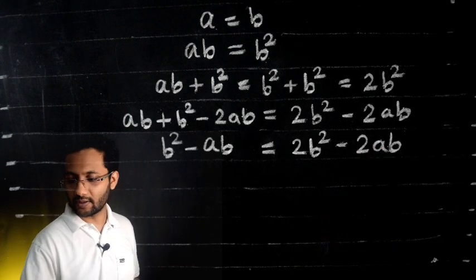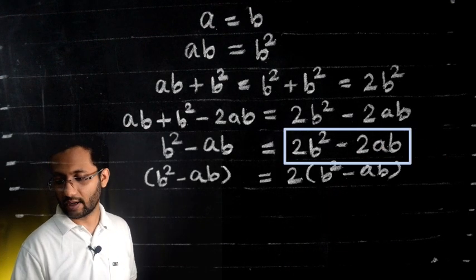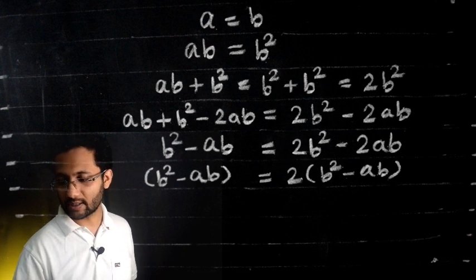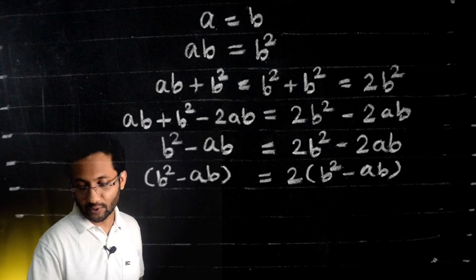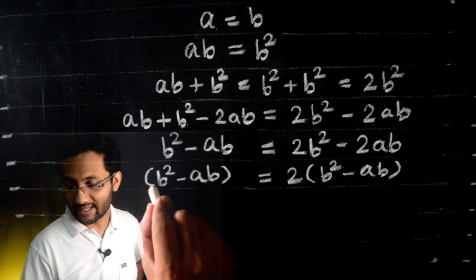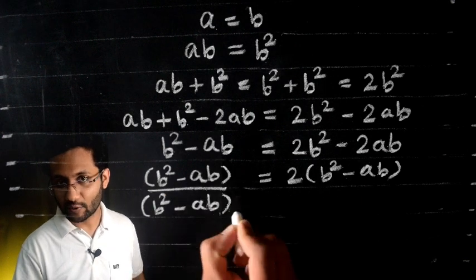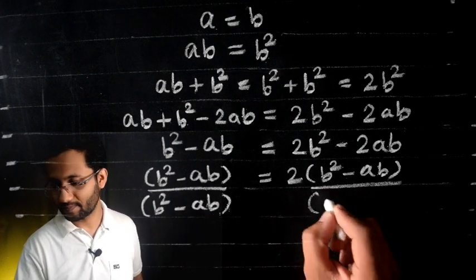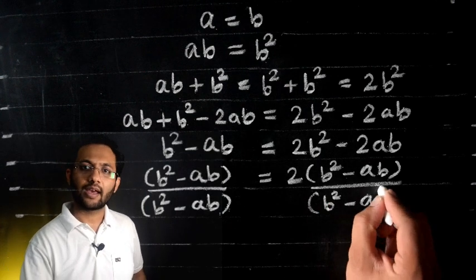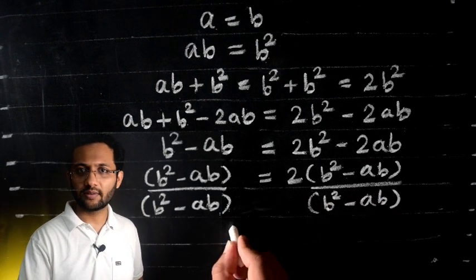If we take 2 common here, it's 2(b² - ab). And as I told you, it's not going to take forever, so the last step: we divide both sides by (b² - ab) and we left with 1 = 2.